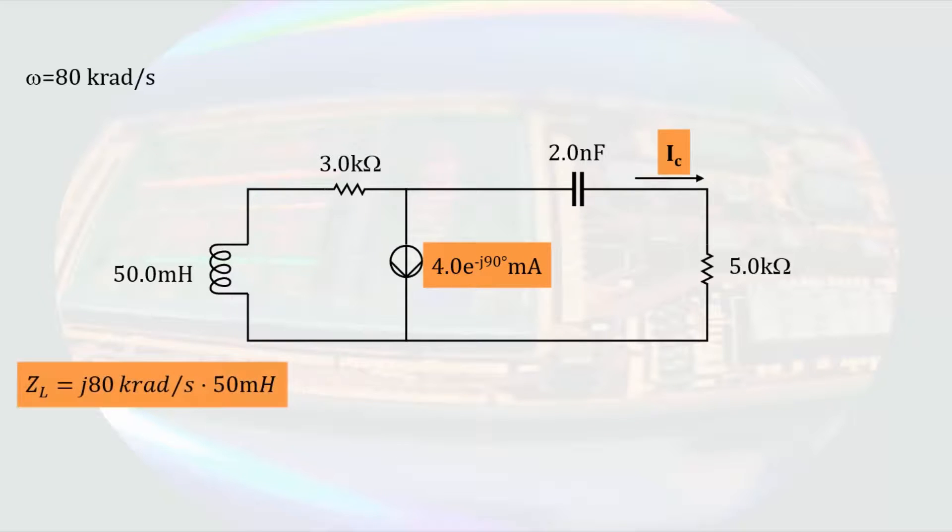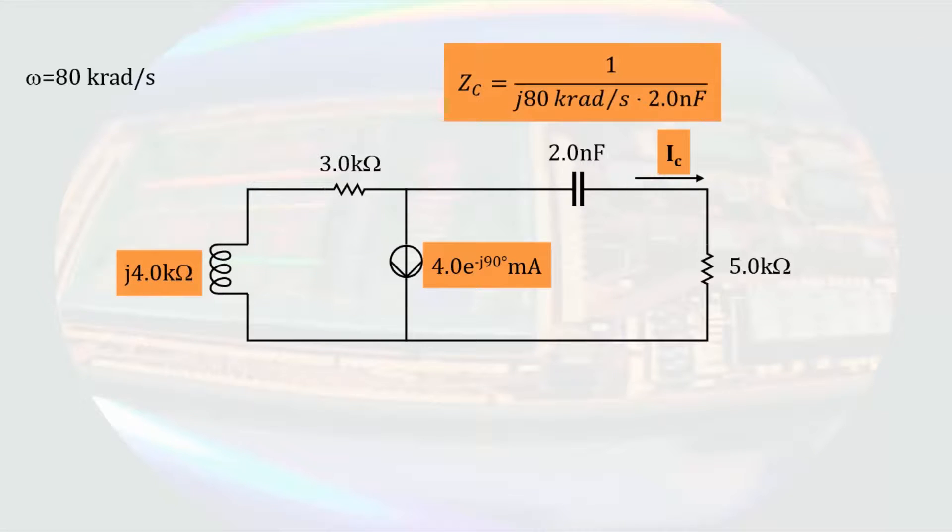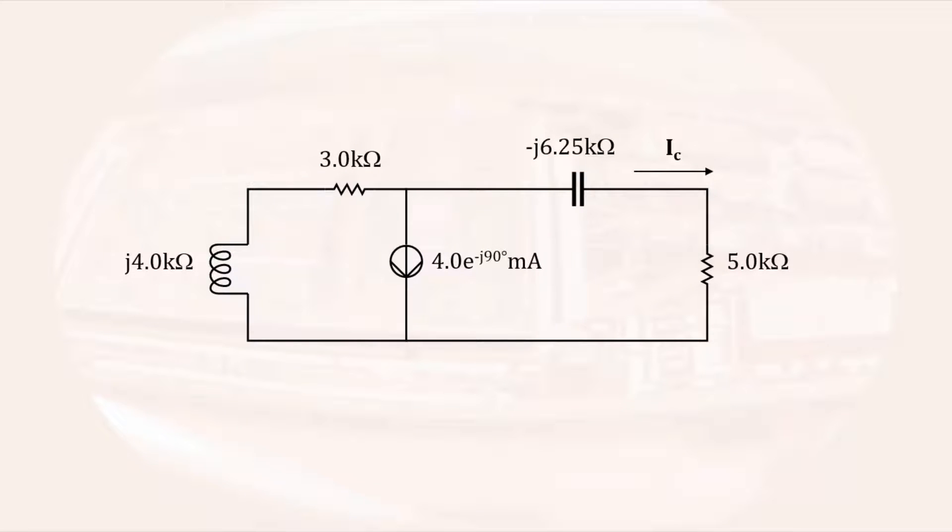The impedance of the inductor is j times angular frequency times the inductance, resulting in an impedance of j times four kilo ohms. The impedance of the capacitor is one divided by j times angular frequency times the capacitance, resulting in an impedance of minus j 6.25 kilo ohms. Resistances do not change when we go to the phasor domain, so now the circuit is converted to the phasor domain.